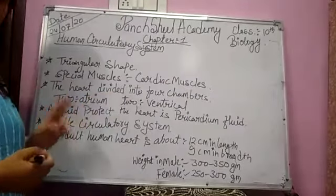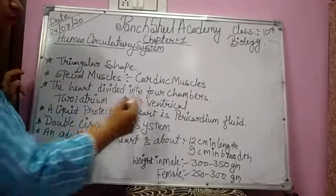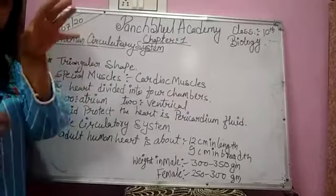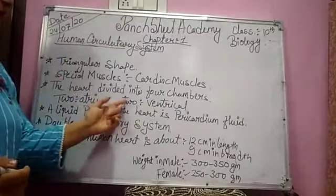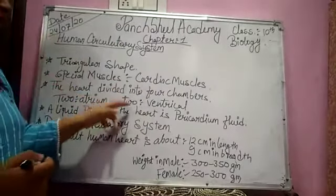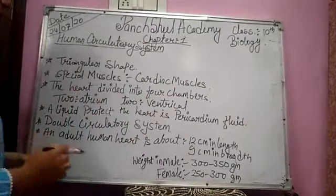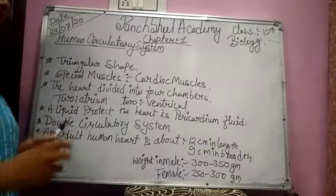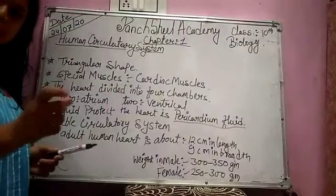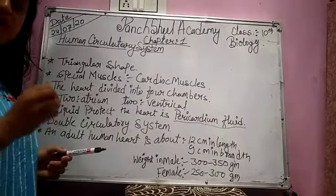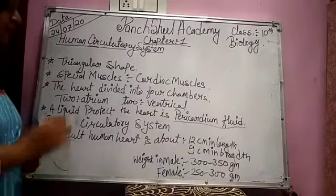The heart is divided into four chambers — two atria and two ventricles. The upper two parts are called the left atrium and right atrium. The lower chambers are called the left ventricle and right ventricle. A liquid protects the heart from injury; that liquid is called pericardial fluid. This special liquid helps protect the heart from shock.